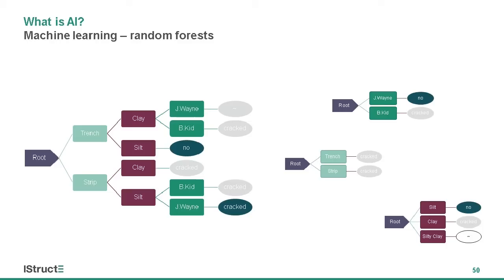We can also build trees from existing data to find correlations between different events and incidents. We can make this generalized by creating a random forest of these trees. When given new data, each tree votes on the cause and the most votes wins. Random forests have proved very successful in applications such as medical diagnosis.